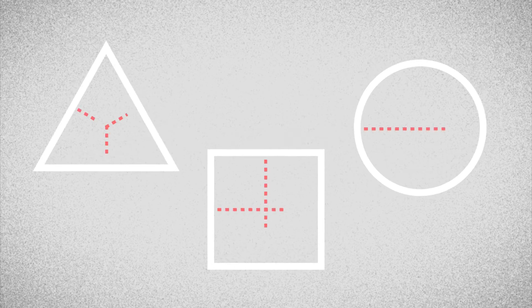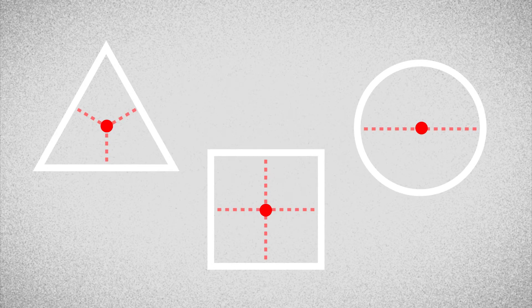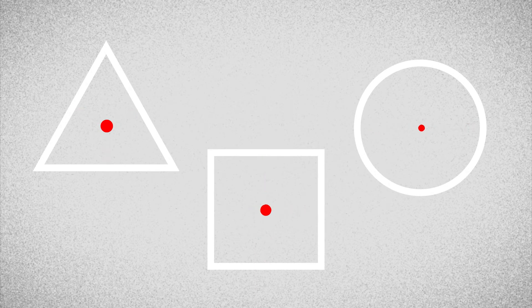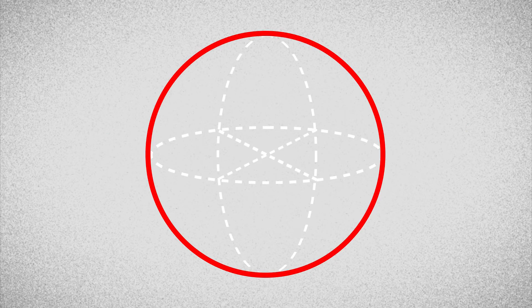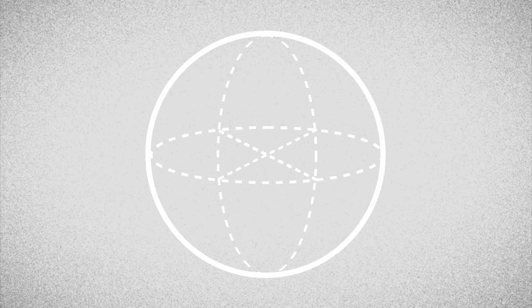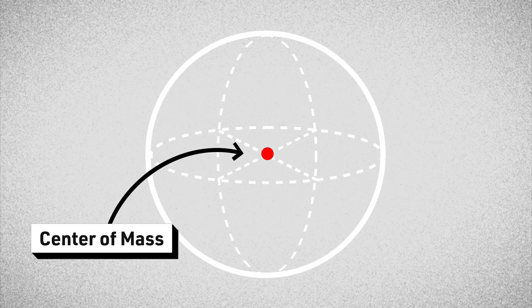For simple shapes, the center of mass is the precise center of the object. For these simple shapes, there are equally simple mathematical equations describing how to locate the center of mass. For example, for a sphere, you can find the center of mass by finding the center of the sphere, or its centroid.